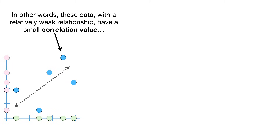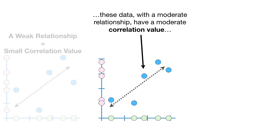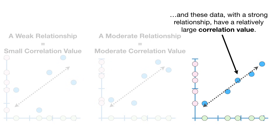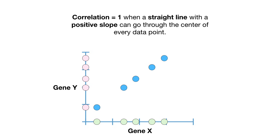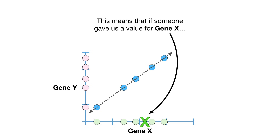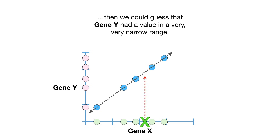Data with a relatively weak relationship have a small correlation value. Data with a moderate relationship have a moderate correlation value. And data with a strong relationship have a relatively large correlation value. The maximum value for correlation is 1. Correlation equals 1 when a straight line with a positive slope can go through the center of every data point, meaning that if someone gave us a value for gene X, we could guess that gene Y had a value in a very, very narrow range.